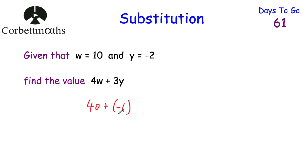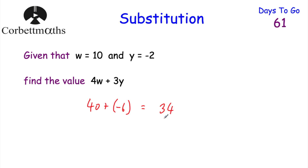So we're going to be adding negative 6. We've got 40 add negative 6. Now 40 add positive 6 would be 46, but if we do 40 plus negative 6 we come down 6, so the answer is 34. So 4w plus 3y equals 34 when w equals 10 and y equals negative 2. 4 times 10 is 40, 3 times negative 2 is negative 6, and 40 add negative 6 is 34.